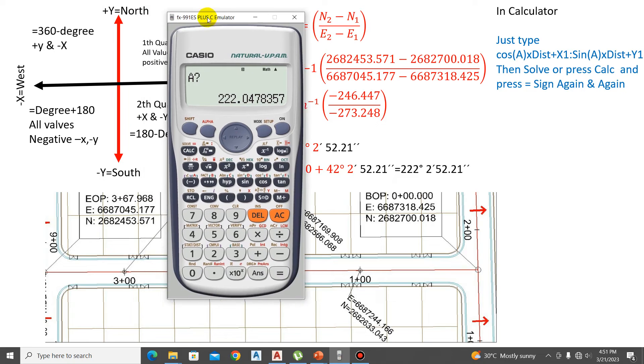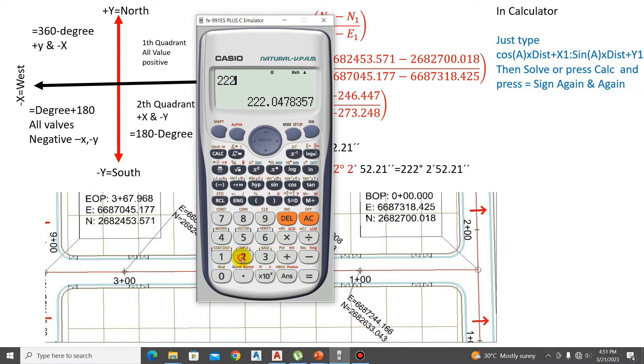We type here the value 22-2-52.21 and press this tier button. We enter the final distance 3+67.968. We equal the first coordinate 668,7318.5425 and the first Y coordinate 6687700.018. Now we have the last coordinate 6687045.177, it's correct. Again press equal: 6682453.571, it's correct.